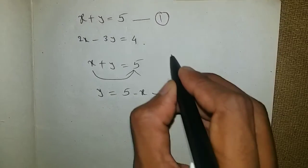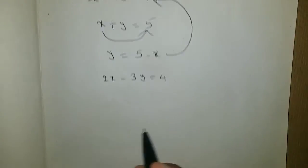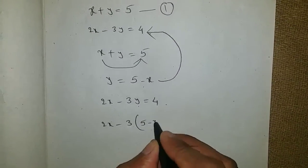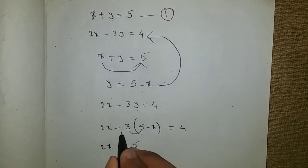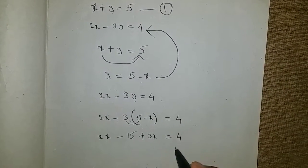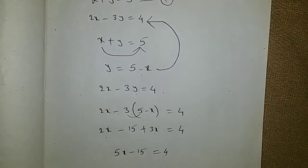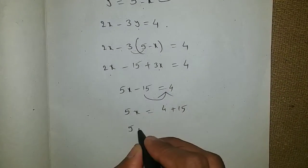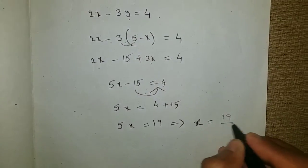Now this y value I will substitute in the second equation: 2x minus 3y equals to 4. In the place of y, I will substitute 5 minus x: 2x minus 3 into 5 minus x equals to 4. That gives 2x minus 15 plus 3x equals to 4. So 2x plus 3x gives 5x, and 5x minus 15 equals to 4. Taking minus 15 to the other side: 5x equals to 4 plus 15, which is 19. So x is equal to 19 by 5.